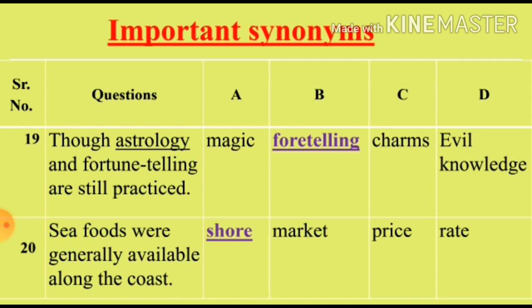Question 20: 'Seafoods were generally available along the coast.' We will see the synonym for the word 'coast'. Option A: Shore (sakle samundar). Option B: Market (bade bazaar). Option C: Price (keemate). Option D: Rate (shara). Options C and D are irrelevant. We will select from Option A and B. Option A, Shore, is the right synonym for the word 'coast'.